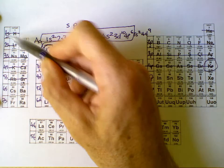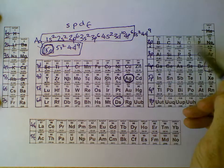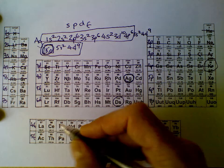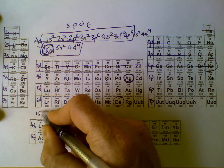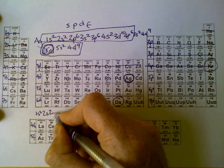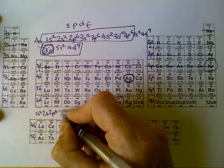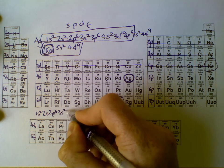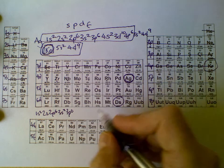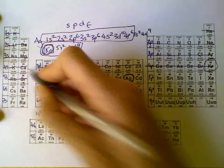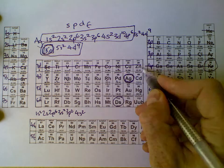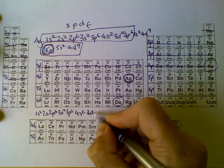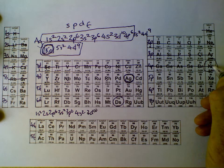It's 1s2, 2s2, 2p6, 3s2, 3p6. I better start writing. 1s2, 2s2, 2p6, 3s2, 3p6, 4s2, 3d10, 4p6.